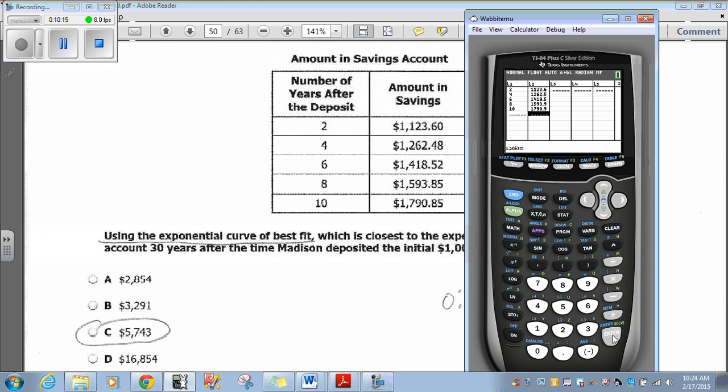Now, on an exponential regression curve, these are just basically points on the exponential regression curve. Then we're going to be looking for another point when it's at 30. First, we need to get the exponential regression curve. Once we have that formula, then we'll plug it in for 30 years. I go to stat, calc, and it's going to be option 0 for exponential regression.